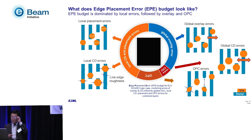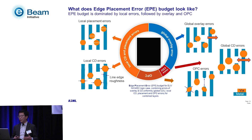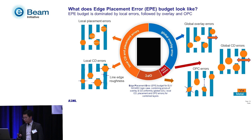This slide shows the various contributors to edge placement error: local placement error, local CD error, on top of traditional global overlay and global CD errors, and also OPC errors. For local errors, we leverage our large field of view — each field of view provides measurements of a very large number, maybe up to a million contact holes — allowing us to derive rich local statistics on placement error and local CDU.